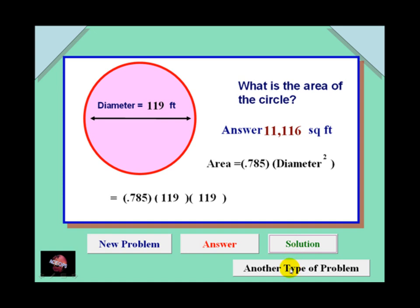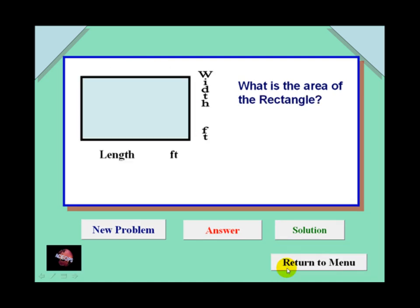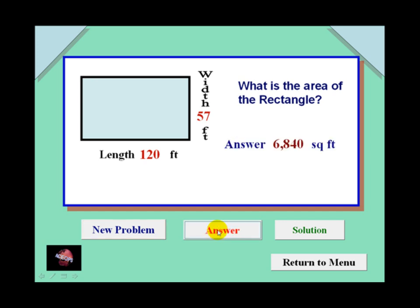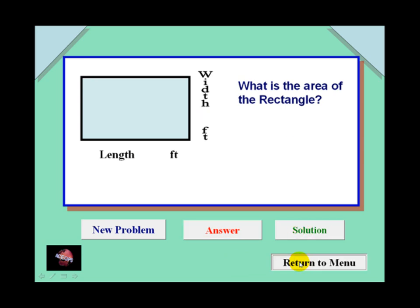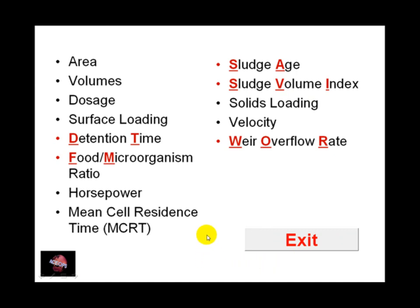Click on another type of problem button and you'll get data related to a different type of problem. When you are done, click on the return button and try other types of problems.